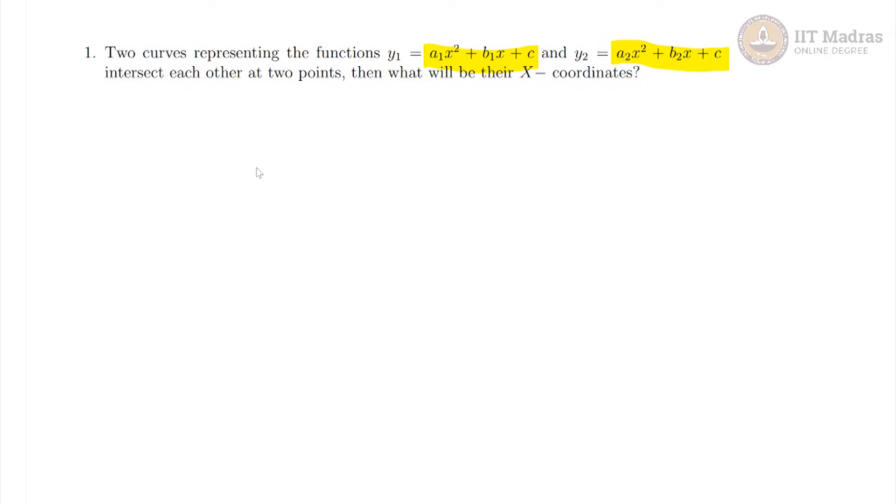Now, clearly if they are intersecting each other, that means the x and y will be same. So that means y1 will be equal to y2 and this is what we are trying to solve for.